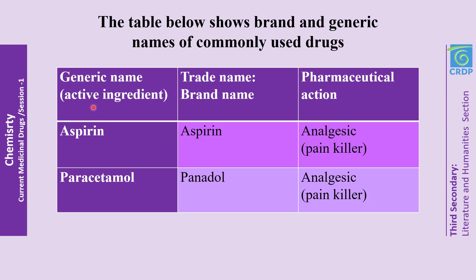In the previous slide you were asked about the pharmaceutical action of aspirin and paracetamol. Here is the answer: the pharmaceutical action of aspirin is analgesic, which means it is a painkiller, and the pharmaceutical action of paracetamol is also analgesic — a painkiller.